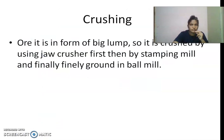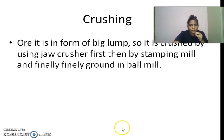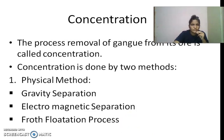We will see each step one by one in detail. Crushing: the ore is in the form of big lumps, so it is crushed using a jaw crusher, then sent to the stamping mill, and finally ground in a ball mill to get fine powder. Concentration is nothing but the removal of gangue from the ore — this is called concentration.